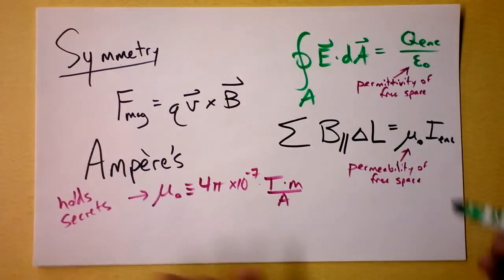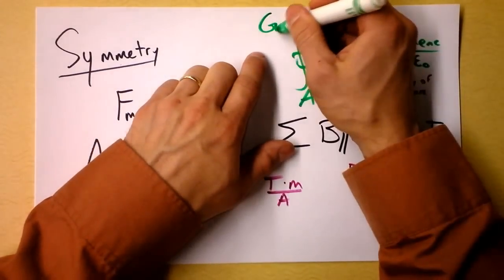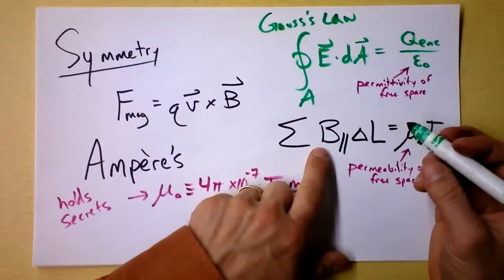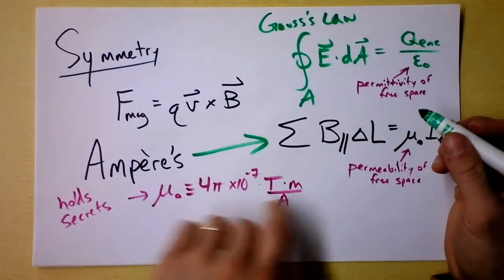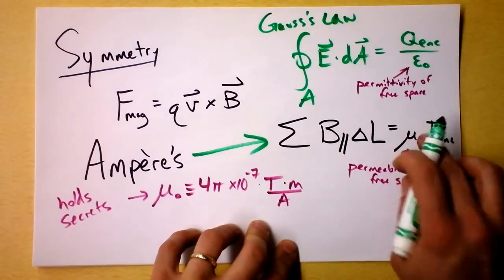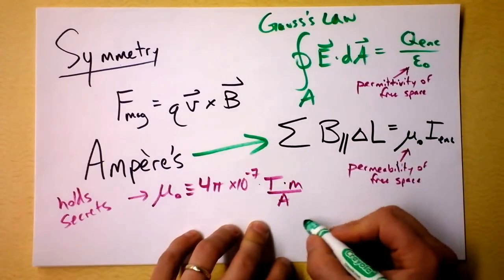Okay, so I want you to see, though, that this, which we call Gauss's law, is very similar to this, which is Ampere's law. And really, I guess I should show you the integral formulation of Ampere's law so you can truly see the symmetry here.